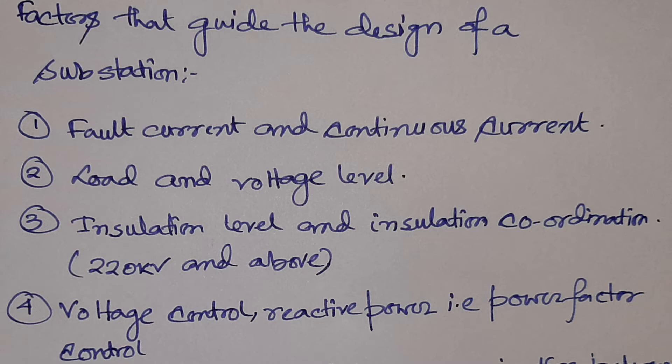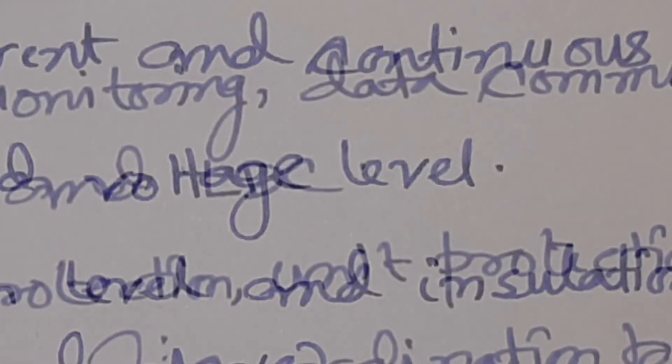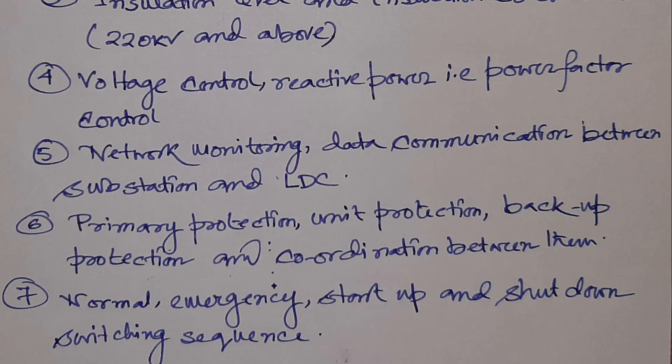Then there comes voltage control and reactive power control. Reactive power control is basically power factor control. Both voltage control and reactive power control can be done by controlling power factor — that is, adding capacitors to the system. A synchronous condenser is also one method but it is an older approach and due to its complexity it is not generally used, so power factor correcting capacitors are most often used.